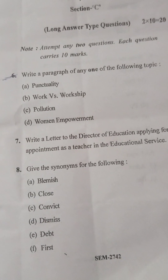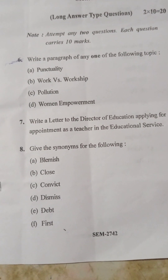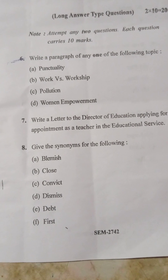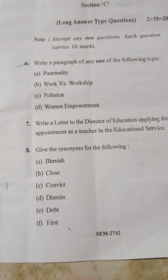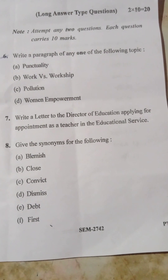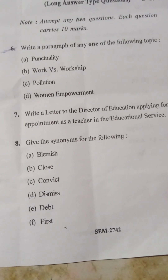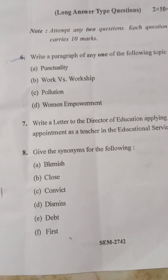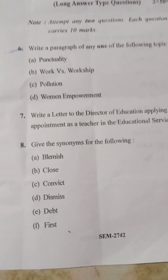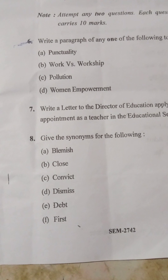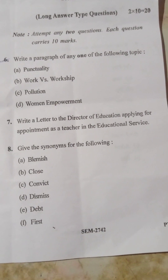Now, Section C. These are long type questions. Each question carries ten marks. Attempt any two questions out of four. Question number six: write a paragraph on any of the following topics — punctuality, work, workshop, pollution, boom and improvement. You have to write a paragraph on any one of these.